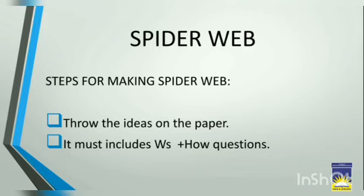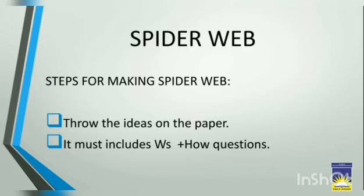The next step is that your ideas must include answers to the W's questions and also 'how' questions. So when you think about ideas, your ideas must be related to the W's and how questions. The W's are: what, when, where, why, and who — those questions which start from these words. And 'how' questions are those which start from 'how', like how much, how long, and so on. I hope that is clear.